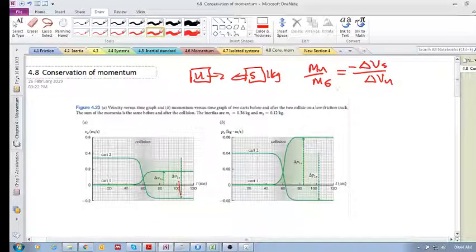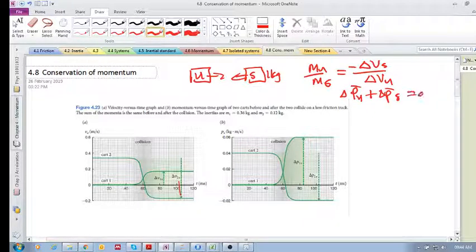If you multiply this by that, you get the change in momentum of the unknown plus the change in momentum of the standard equals 0. So we had the change in the momentum of delta P of the unknown plus delta P of the standard was 0.